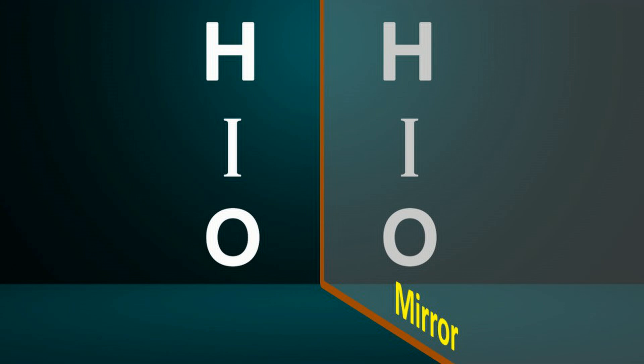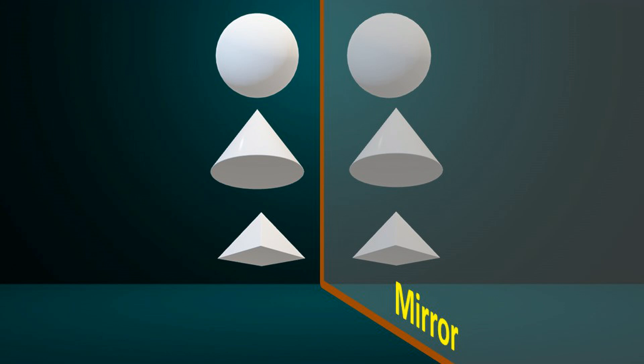It is not just A. Many other letters in English, like H, I, and O, also share this property. This characteristic is not limited to letters. Many geometric shapes, like spheres, circles, and pyramids, are also identical to their mirror images.